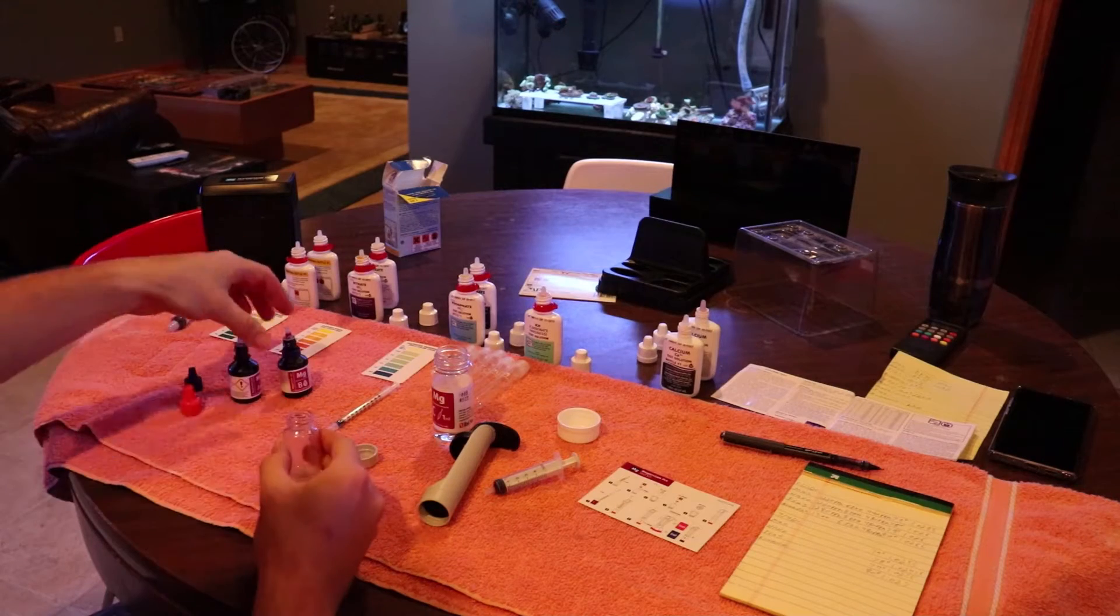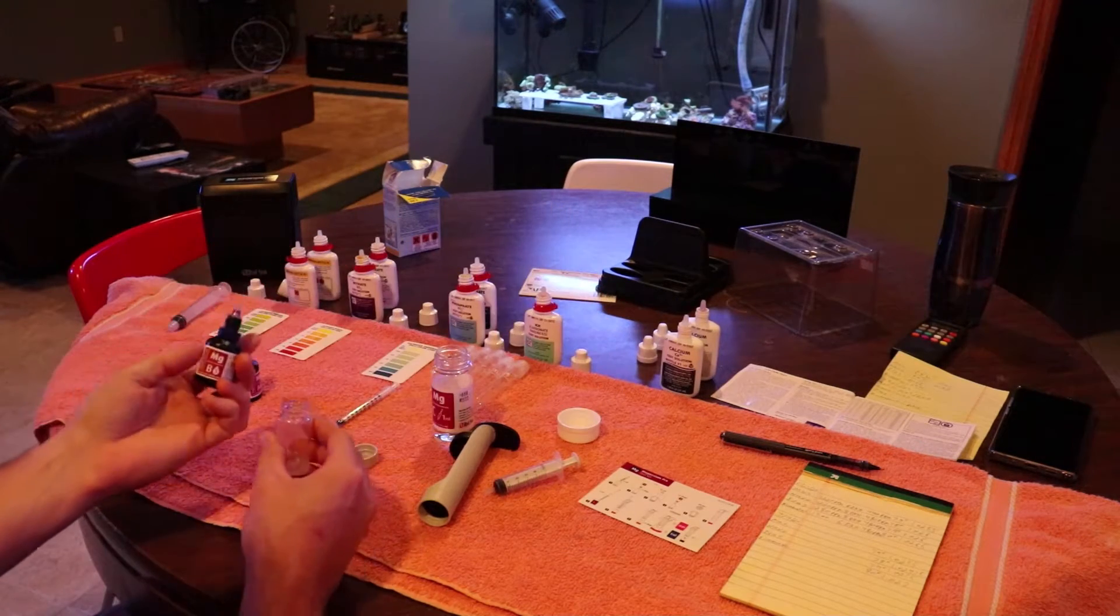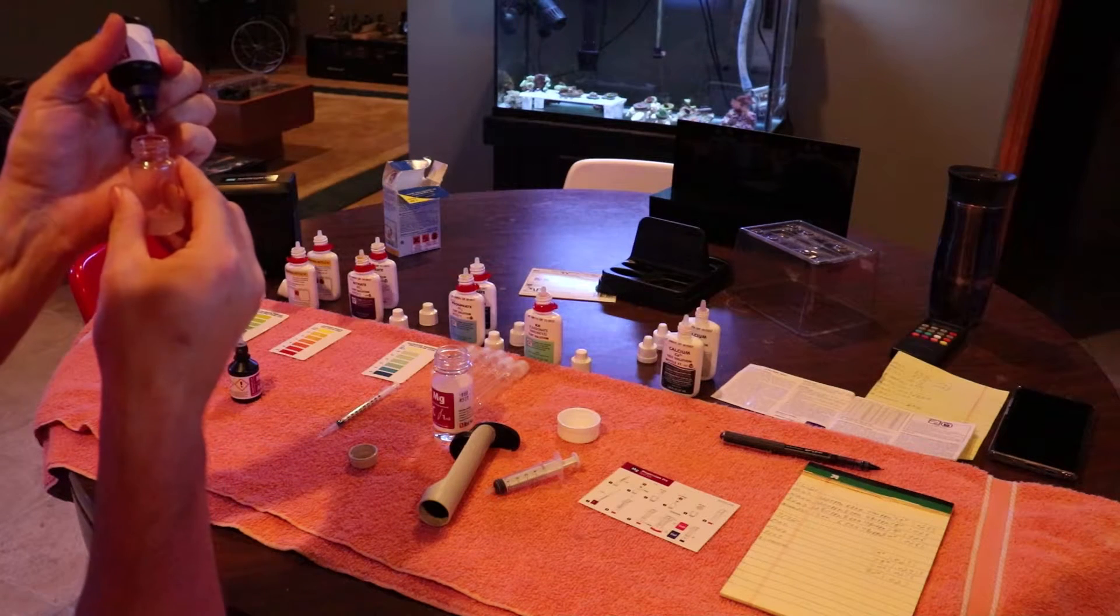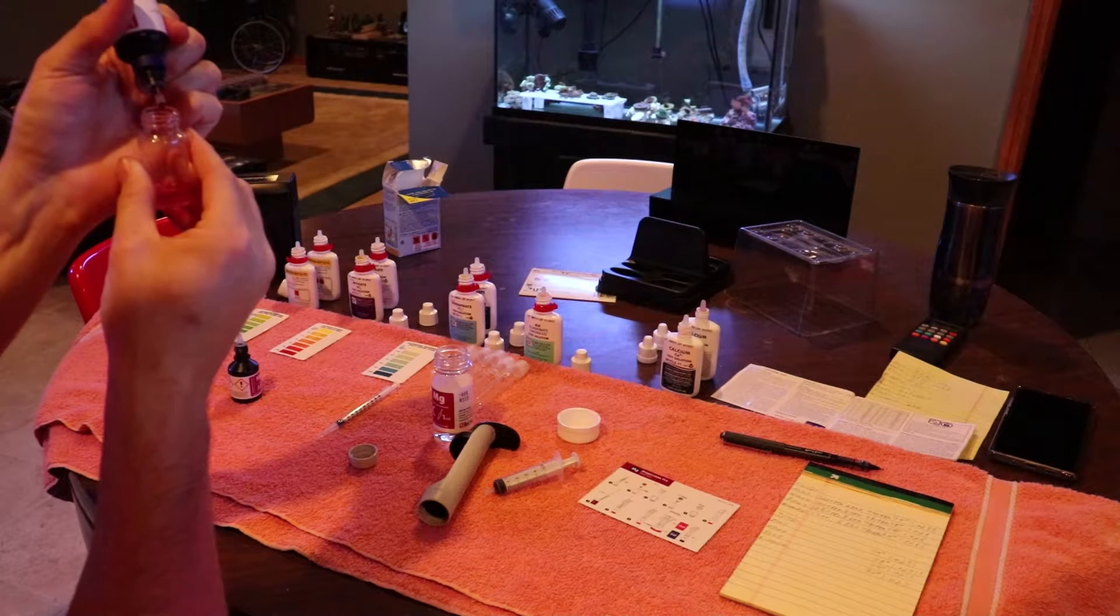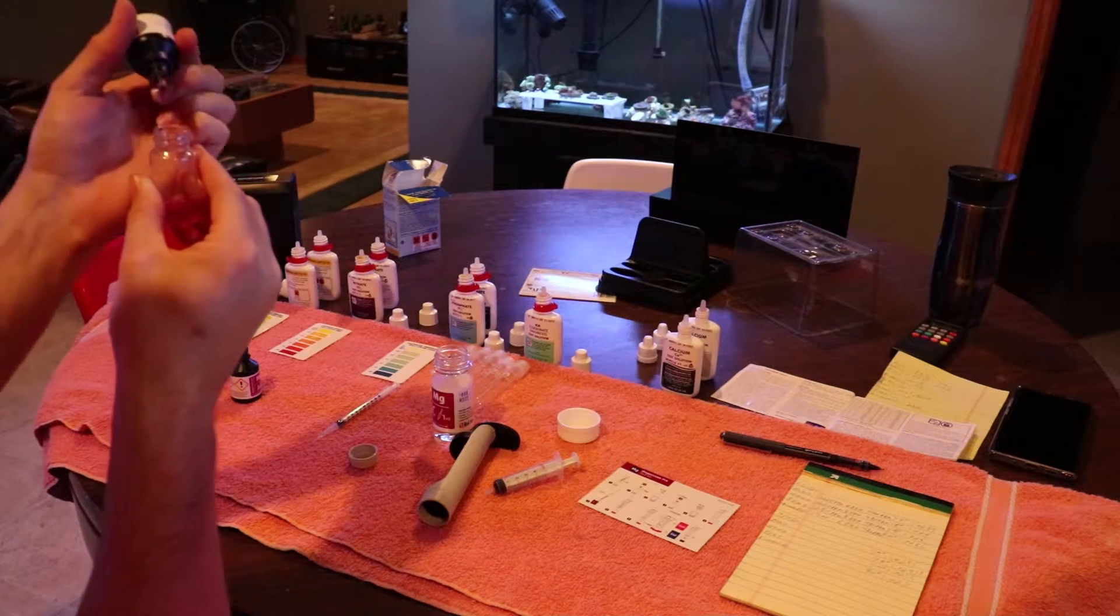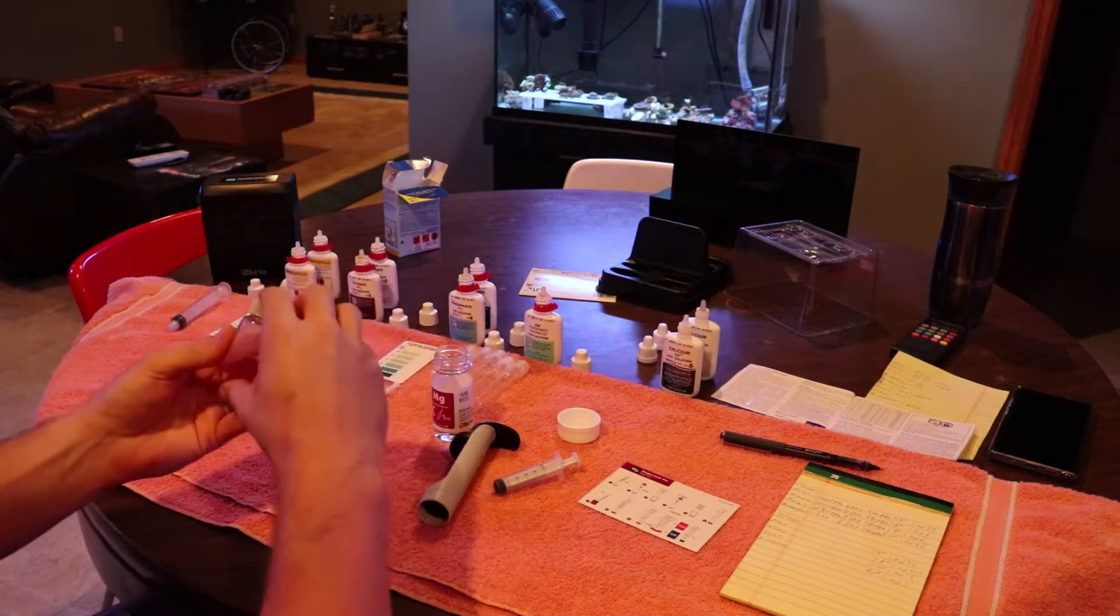You're supposed to wait 15 seconds in between each drop and shake it, but I usually just do all five. You're going to go to reagent bottle B, add five drops and give it a little shake. Let it sit for about 60 seconds before you move on to the next step.